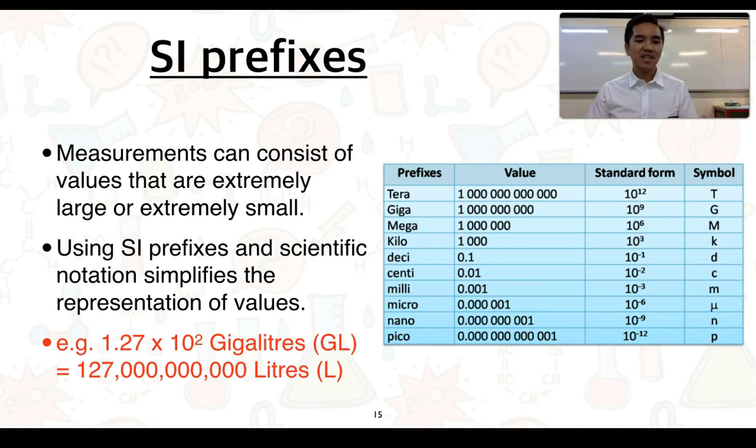Using SI prefixes and scientific notation does help simplify the representation of values. So if we had a volume of 127 billion liters, we could represent it as gigalitres and we can use also scientific notation here. 127 billion liters, we could think of as being equivalent to 1.27 times 10 to the power of 2 gigalitres. So there's the scientific notation, but we've essentially converted liters into gigalitres. And we know that one gigalitre is equivalent to 1 billion liters.